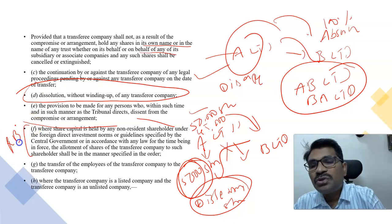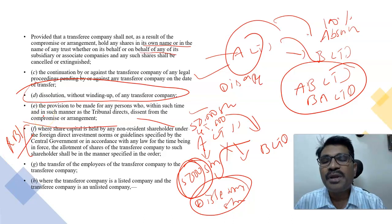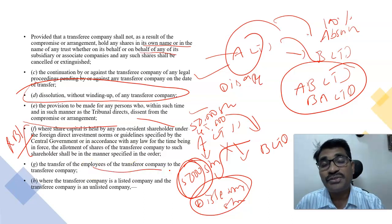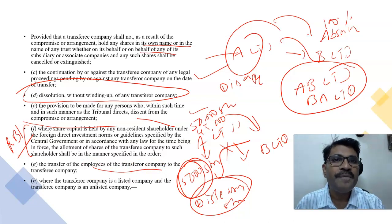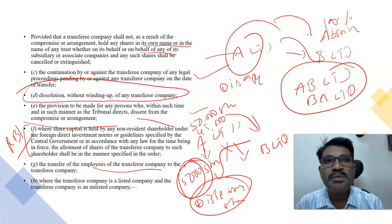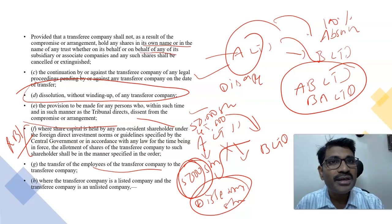Where the share capital is held by non-resident shareholders, the FDI norms of the RBI will apply. Another important provision is the transfer of employees of the transferor company to the transferee company — a famous case is Hindustan Unilever vs. Hindustan Lever Limited. When there is a transfer of one company to another, the major company will direct that employees also be transferred to the new company. Sometimes employees may be interested; sometimes they are not.